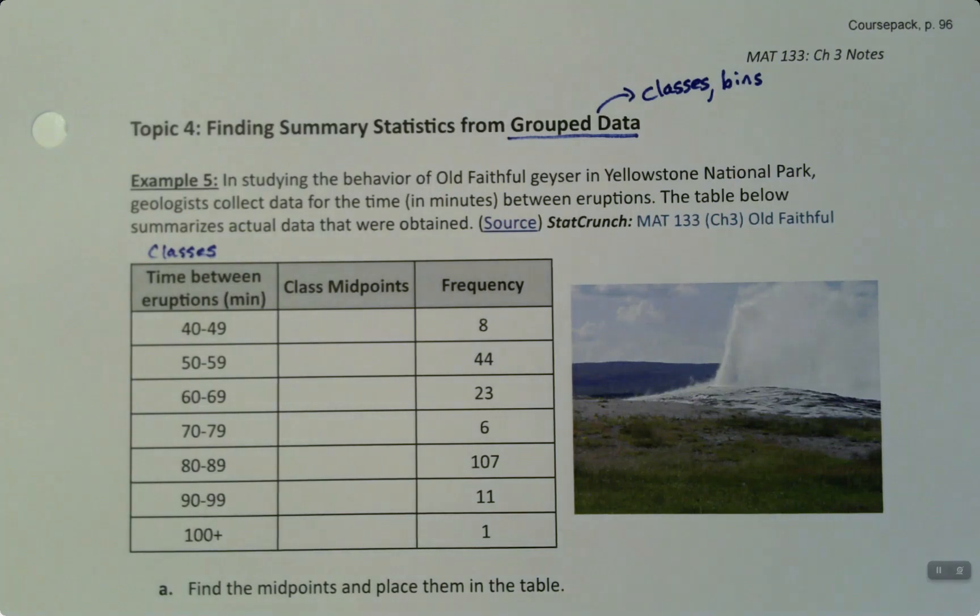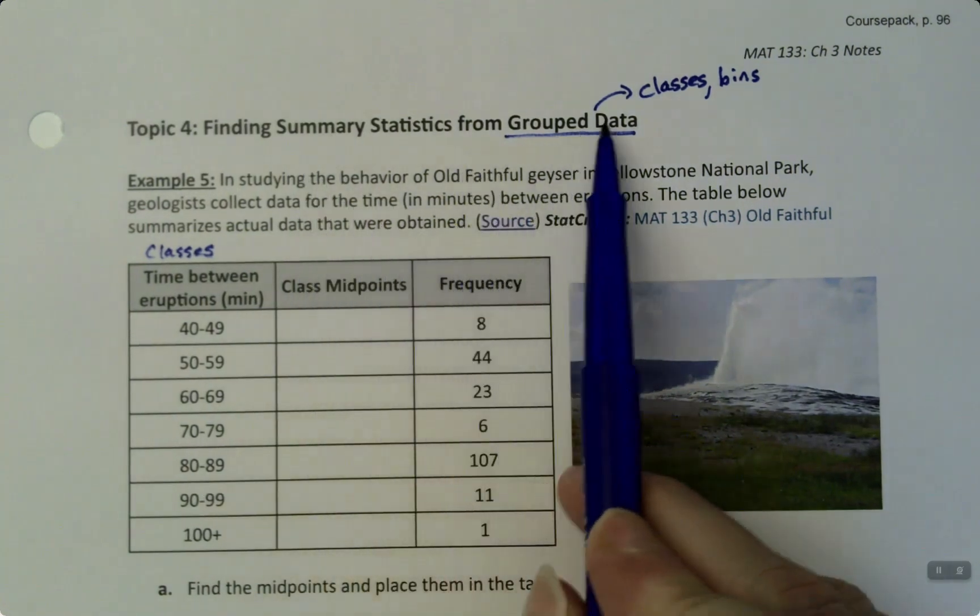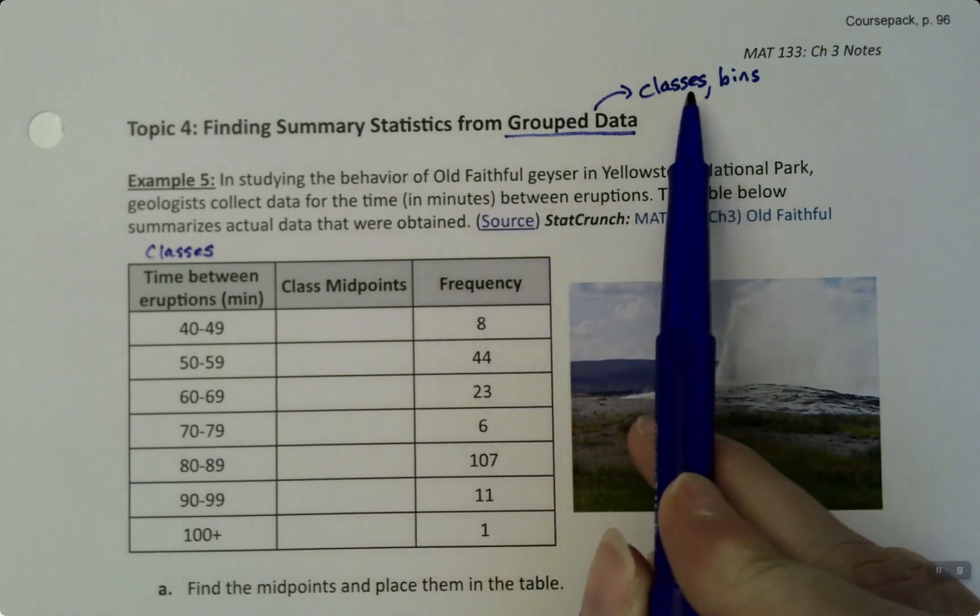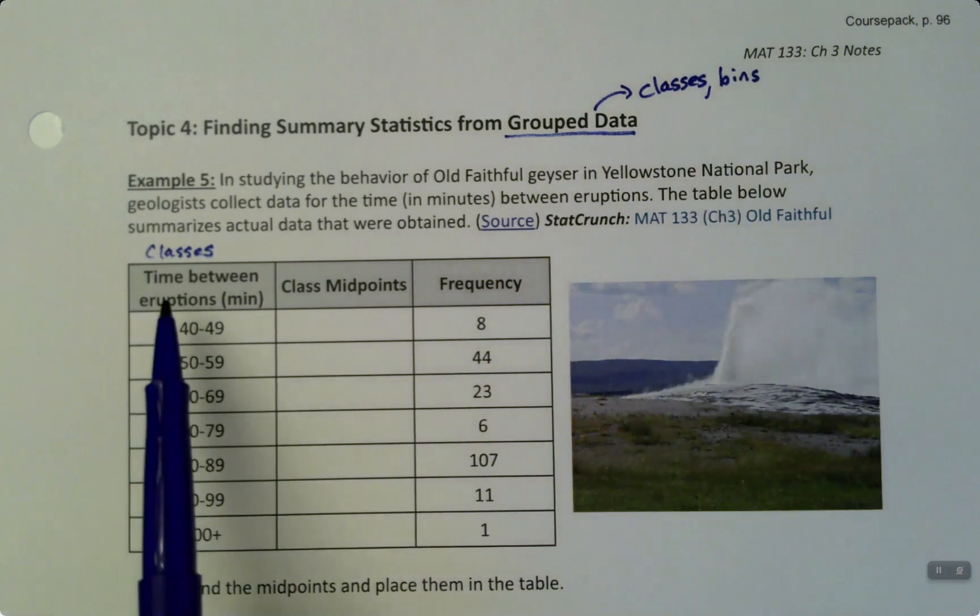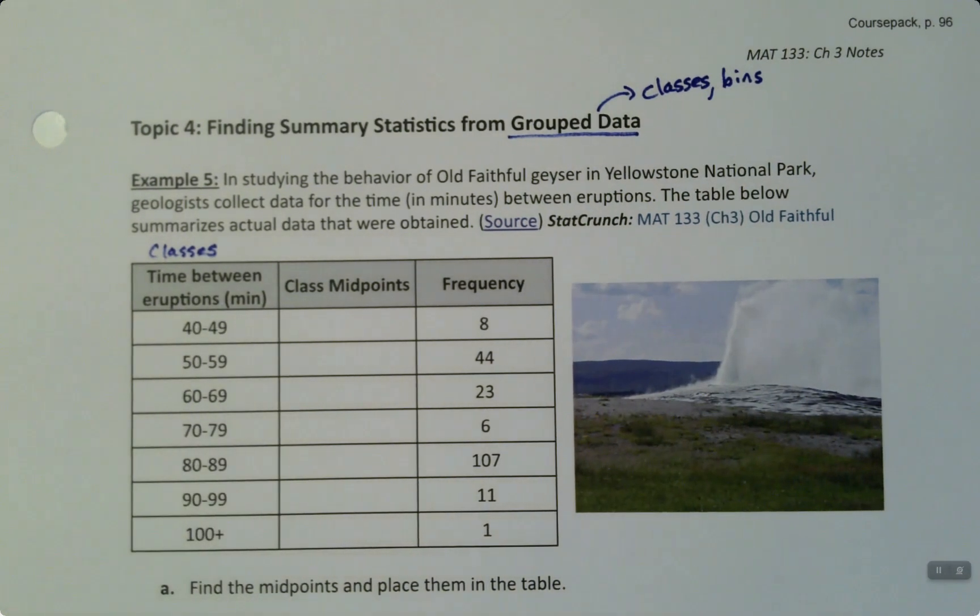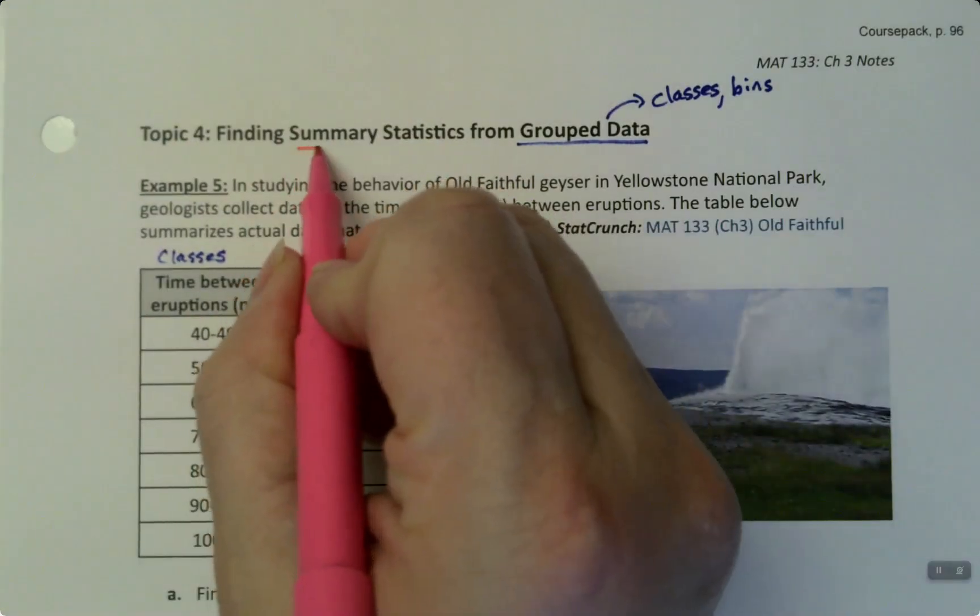In this last topic in section 3.3, we're going to find summary statistics for grouped data, which is data that have classes and bins. In other words, classes like you see down here.